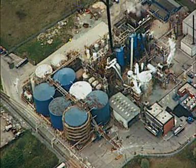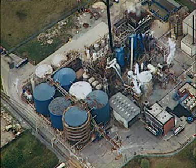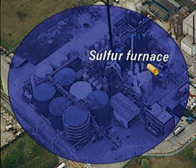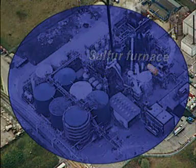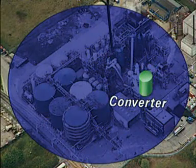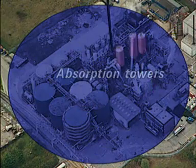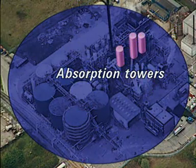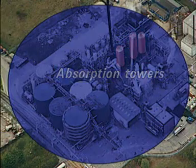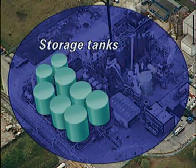At this small plant that makes 600 tonnes of acid per day, the sulphur is burnt in a furnace. Sulphur dioxide passes to the converter. Sulphur trioxide is fed to the absorption towers to produce acid of the required concentration. This is then stored for delivery by tanker.